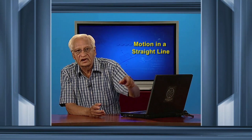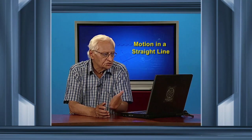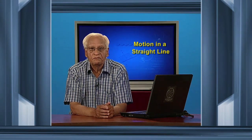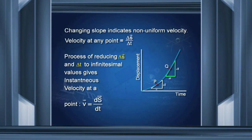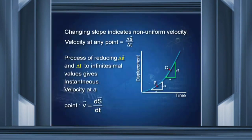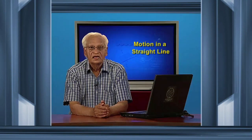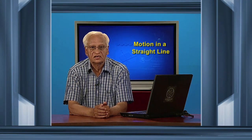However, if the graph is not linear, then the velocity at a point like P is found by the slope at P, that is Δs/Δt. At point Q, the slope is again found by Δs/Δt, and you can see the slopes at these two points are different. This means the velocity is changing — it is not constant. If velocity is not constant, we define what is known as instantaneous velocity at a point.